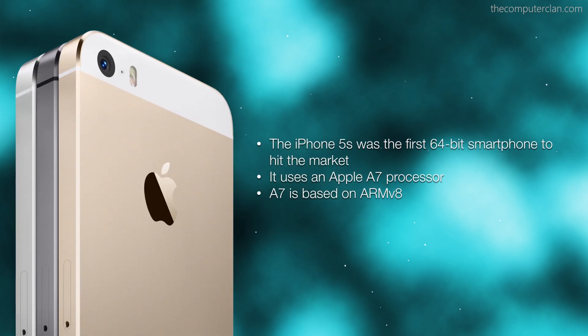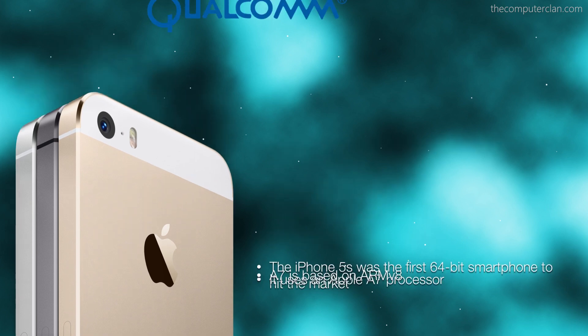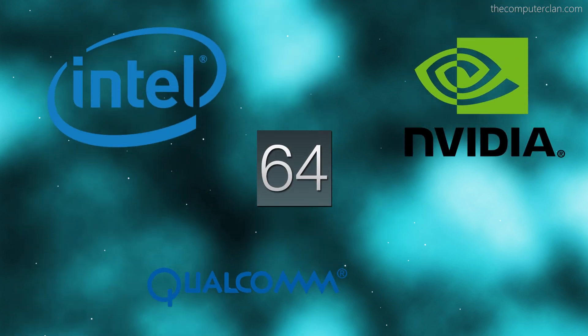Now, the iPhone 5S was the first 64-bit smartphone to hit the market. It uses an A7 processor designed by Apple, and it is based on the ARMv8 architecture, which is 64-bit. This is where the confusion comes in for a lot of people, and this is why some people think it's a marketing gimmick. If the main advantage of a 64-bit OS is to address more than 4 gigabytes of RAM, then what's the point of an iPhone having a 64-bit processor if it only has one gigabyte of RAM? Well, that is an excellent question. But it's not just Apple looking into this — it's Qualcomm, NVIDIA, Intel, and probably a bunch of other companies. That must mean there's something about 64-bit mobile computing that is important.